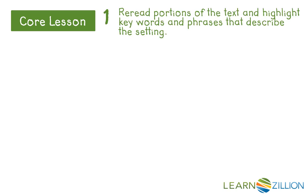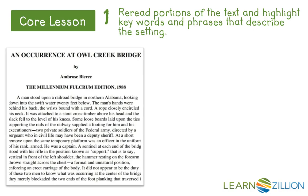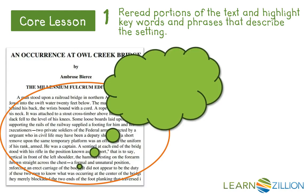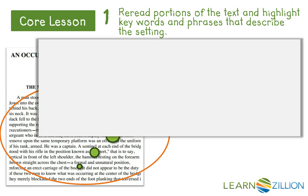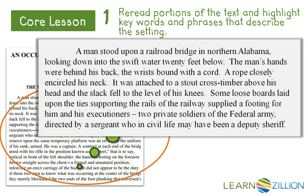Let's go ahead and do that first step. The portion we're going to look at right now is from the very beginning of the story — Section 1, Paragraph 1, highlighted here. As I read, I want to think about what words and phrases describe the time and/or the place for the action of this story, and those are the words and phrases I want to highlight in my text.